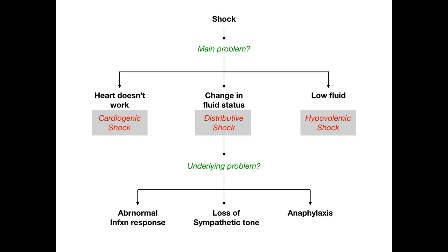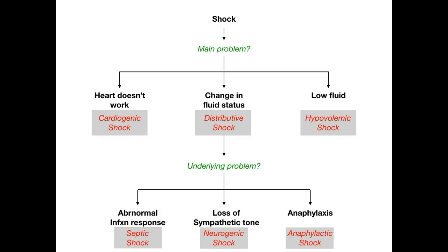If it's an abnormal response to an infection, we're dealing with septic shock. If we've lost sympathetic tone, we're dealing with neurogenic shock. And if it's an anaphylactic reaction, then we're dealing with anaphylactic shock. So those are our five types: cardiogenic, septic, neurogenic, anaphylactic, and hypovolemic. The distributive umbrella really refers to three subtypes: septic, neurogenic, and anaphylactic.